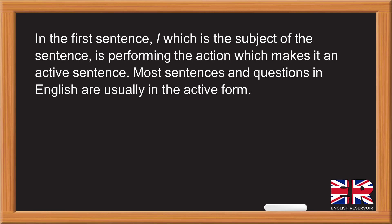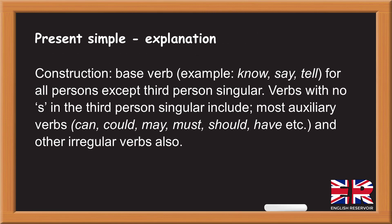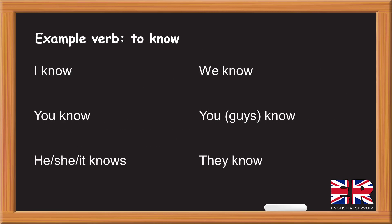Most sentences and questions in English are usually in the active form. Present simple explanation — construction: base verb. Example: no 'say', 'tell' for all persons except third person singular. Verbs with no 's' in the third person singular include most auxiliary verbs: can, could, may, must, should, have, etc., and other irregular verbs. Example: to know — I know, you know, he/she/it knows, we know, you guys know, they know.